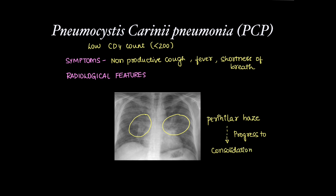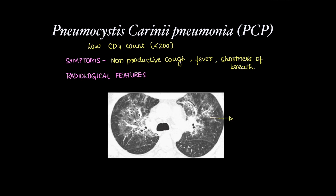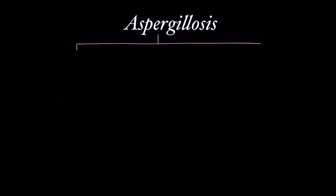These findings can also be seen on CT imaging as perihilar ground glass opacities or consolidation with associated interstitial thickening. There can be subpleural sparing, and pneumatoceles can occur leading to spontaneous pneumothorax.